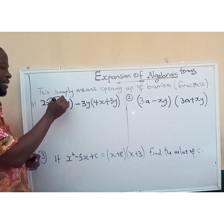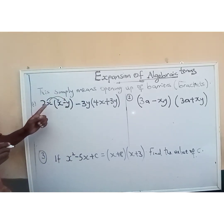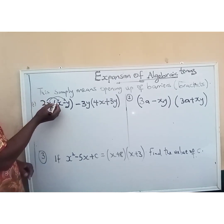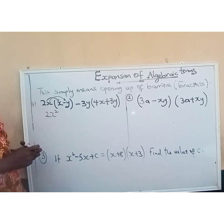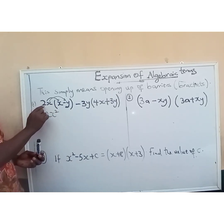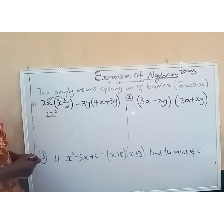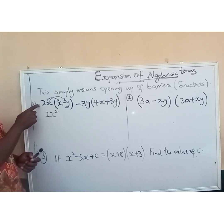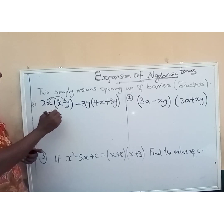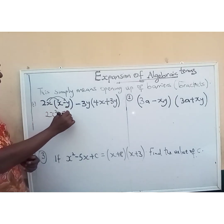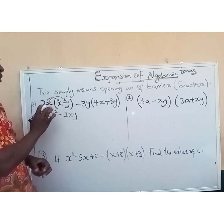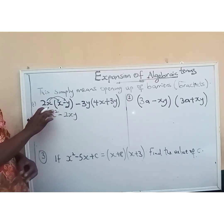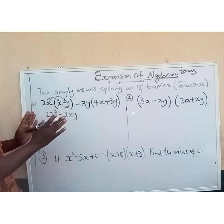So 2x multiplied by x: the coefficient of x here is 1, so 2 multiplied by 1 is 2, then x multiplied by x is x squared. That's the first term. Next, 2x multiplied by minus y: plus times minus gives minus, so we have minus 2xy. We have successfully opened up the first bracket.